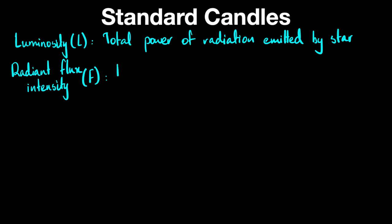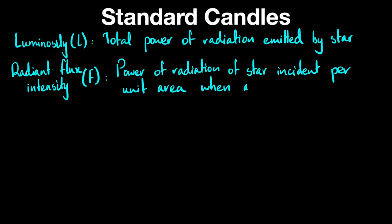So this is the power of radiation of a star incident per unit area when arriving normally to the surface. Normal means perpendicular at a surface.